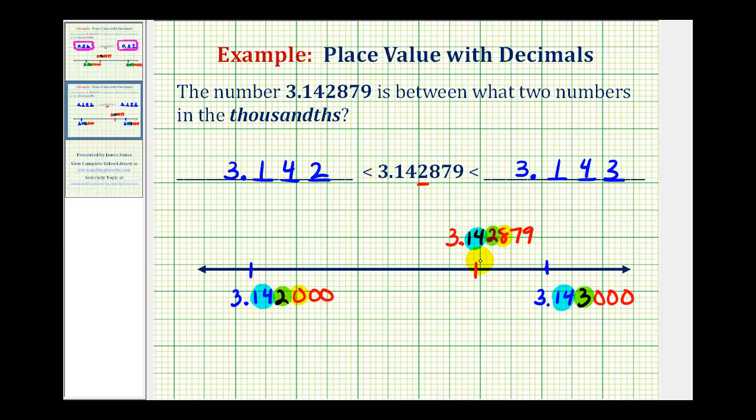So this verifies that the given number is between these two numbers to the thousandths place value. But when giving our answer,